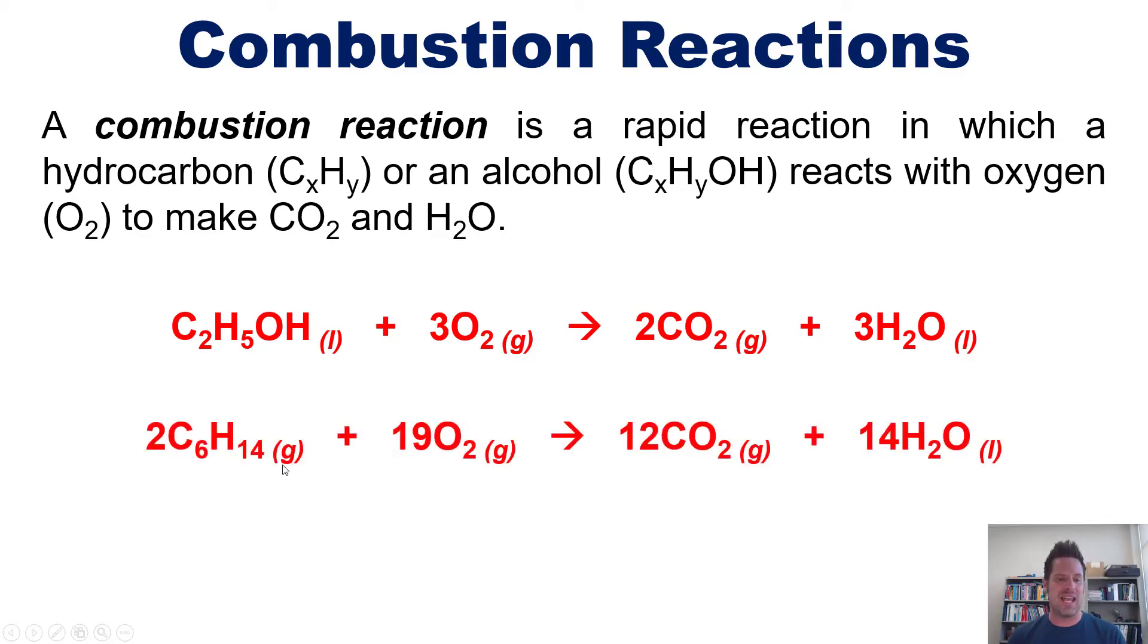Alternatively, we can take hexane, combine O2 gas in a 2 to 19 ratio to yield or produce CO2 and H2O. You'll notice that in combustion reactions, we always start with a molecule that has only carbons and hydrogens, or only carbons and hydrogens with OH, and we combine it with O2 as another reactant, and we always end up getting the exact same products: CO2 and H2O.